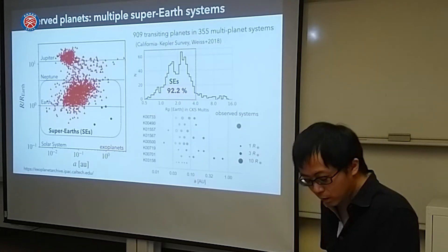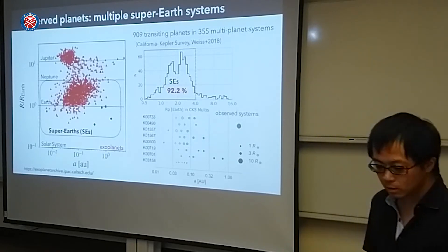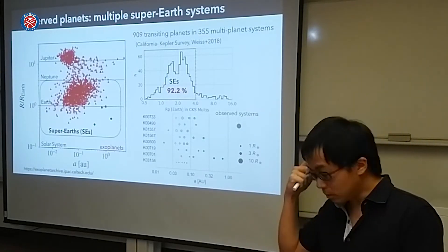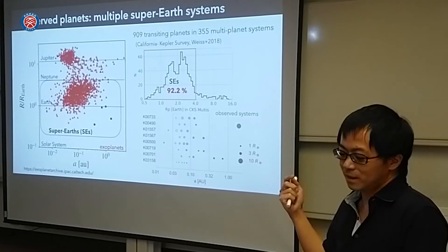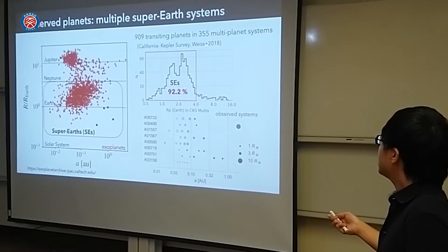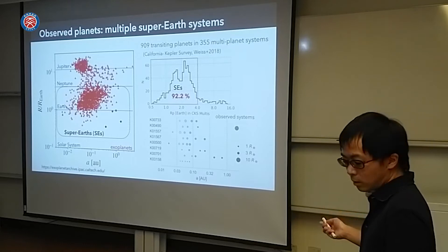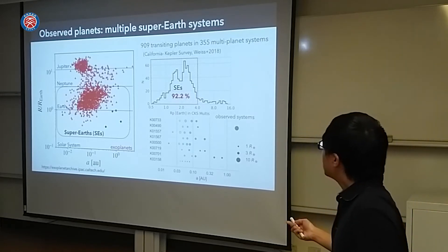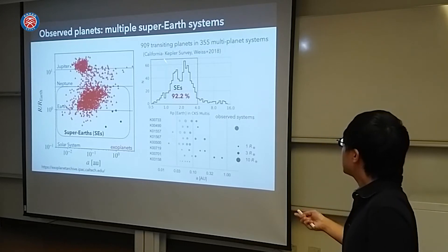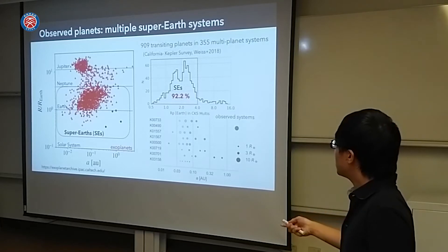In this talk, I told these planets are super-Earths. Actually, there are three or four thousand planets observed, and there are only about 1,000 planets in over 300 systems. So 300 multiple systems are outside. Most of these planets are super-Earths, over 90% of super-Earths. These multiple planetary systems are mainly composed by these five planets, such as these systems.